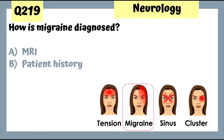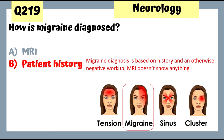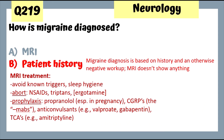Question 219: How is migraine diagnosed — with MRI or patient history? Since this is a clinical diagnosis, the answer is patient history; MRI will not show anything. Abortive therapy includes NSAIDs and triptans; ergotamine is one but rarely used. Prophylaxis includes propranolol (especially used in pregnancy), CGRPs (medications ending in '-mabs'), anticonvulsants such as valproic acid and gabapentin, and TCAs such as amitriptyline.